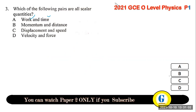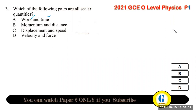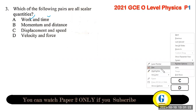Question 3: which of the following pairs are all scalars? A scalar quantity has magnitude but no direction. The only pair here that are both scalars is work and time — they are both scalar quantities. The answer is A.